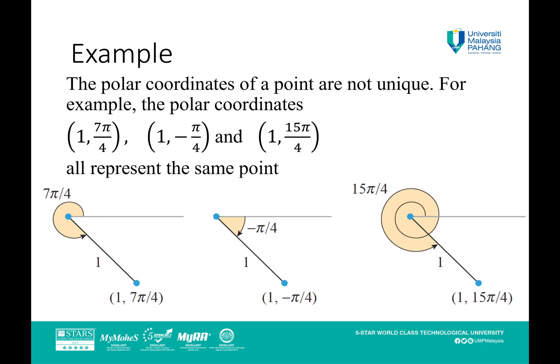Example: the polar coordinates of a point are not unique. For example, the polar coordinates (1, 7π/4), (1, -π/4), and (1, 15π/4) all represent the same point.